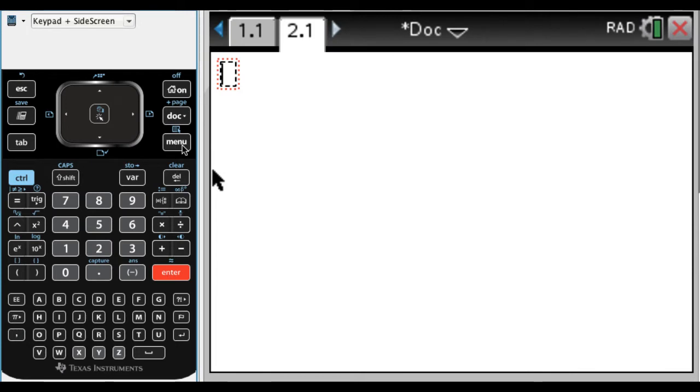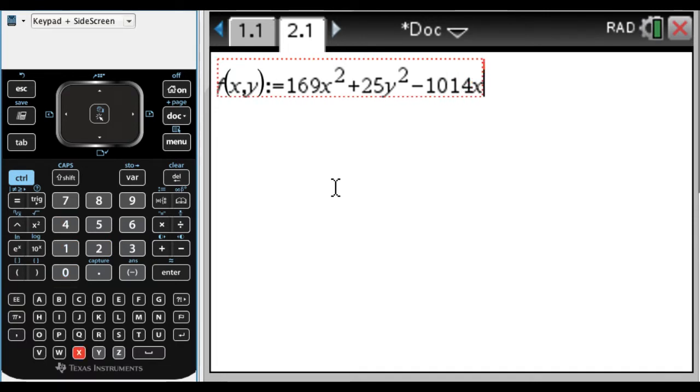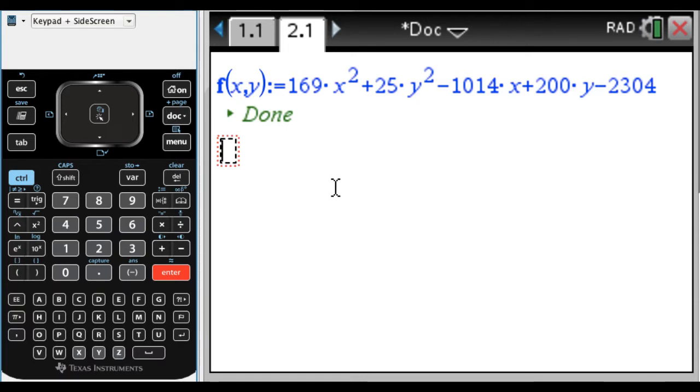What I'm going to do is create a function, and it's a multivariable function of x and y. So it's f(x,y). I'm just typing in the math box, and then colon equals, which for you is control and then the templates. Now let me type in, I'm going to type in the left-hand side of a conic section here. So let's say 169x² + 25y² - 1014x + 200y minus 2304. I'm going to press enter, and it says done, and that's good.